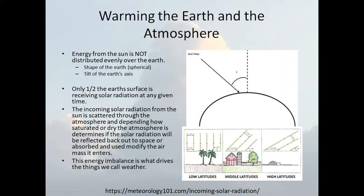At any given time, half of the earth's surface receives solar radiation. Half of it is absorbed or reflected back out to space. The incoming solar radiation from the sun is scattered through the atmosphere, depending on how saturated or dry the atmosphere is. That determines whether the solar radiation will be reflected back out to space or absorbed and used to modify the air mass.